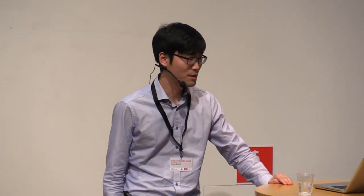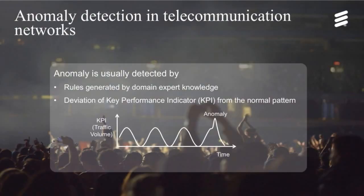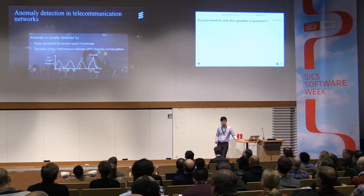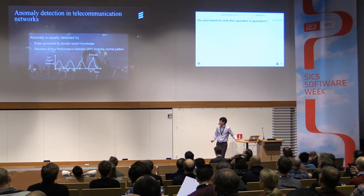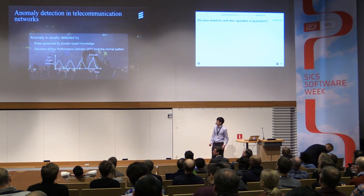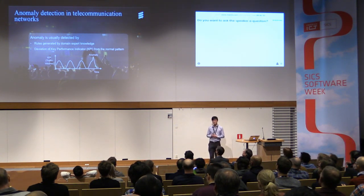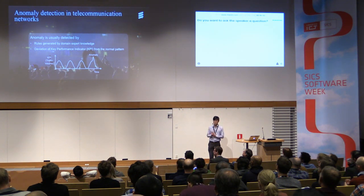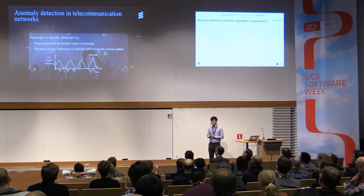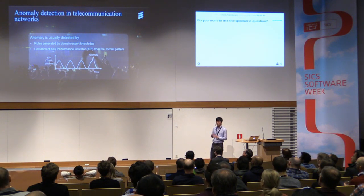First, what is anomaly in telecom networks? There are many definitions depending on use case. But in general, we can say that anomaly is detected by the rules generated by domain expert knowledge. For example, traffic volume, which is one KPI, has a daily pattern, but if there suddenly comes a peak on the last day, then we can say this is anomaly because it's different to normal pattern. So detection of this anomaly can make network cooperation even better.